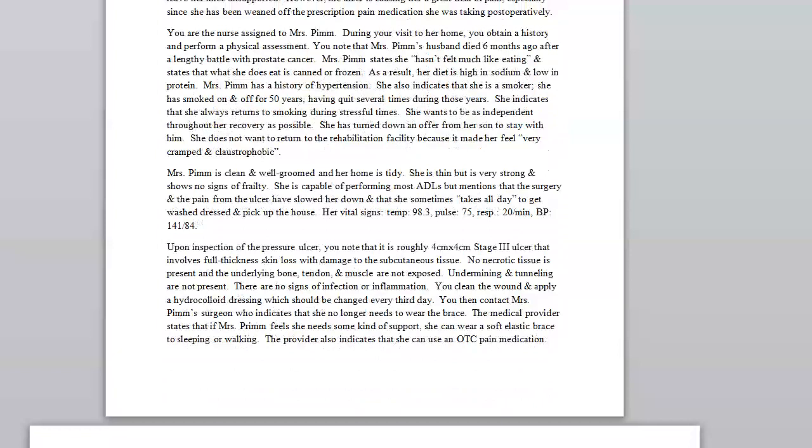Her vital signs are temp 98.3, pulse 75, respirations 20 per minute, and blood pressure 141 over 84. Upon inspection of the pressure ulcer, you note that it is roughly 4 centimeters by 4 centimeters stage 3 ulcer that involves full thickness skin loss with damage to the subcutaneous tissue. No necrotic tissue is present, and the underlying bone, tendon, and muscle are not exposed.